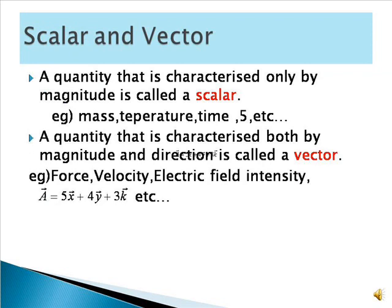Let us see what is a scalar and what is a vector. A scalar is a quantity that is characterized only by magnitude. Examples: mass, temperature, time, or any constant value. A vector is a quantity that is characterized both by magnitude and direction. Examples: force, velocity, electric field intensity, etc. A vector has both magnitude and direction, while a scalar has only magnitude.